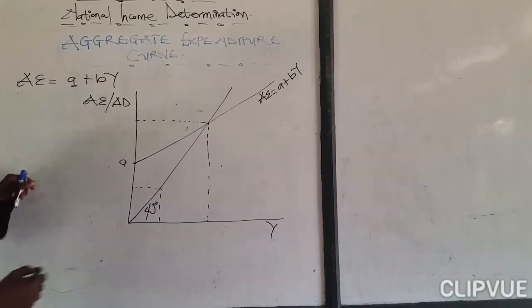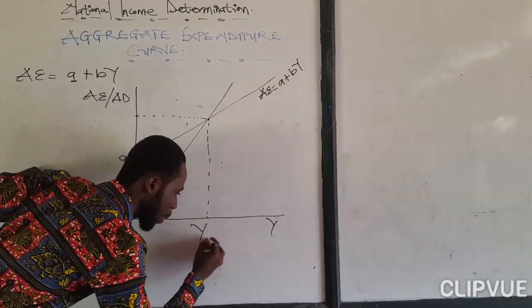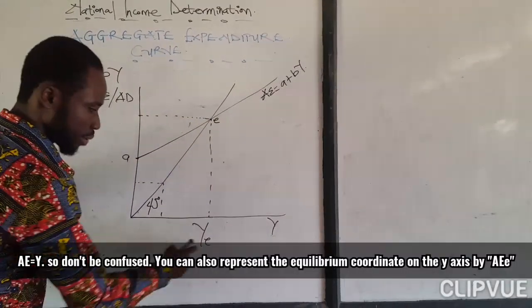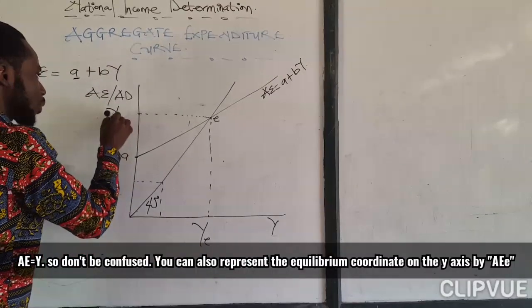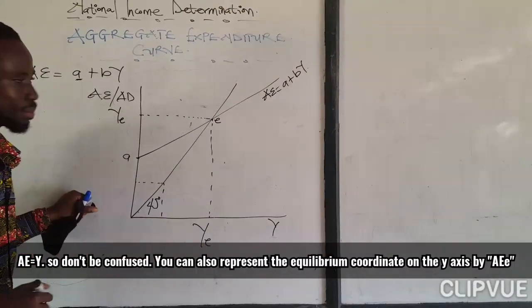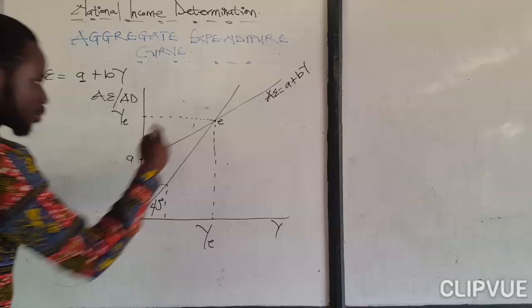I hope it makes sense. So here will give us the equilibrium national income. So here is the equilibrium. So equilibrium national income and equilibrium national income. I hope it makes sense. So that is how to represent the equilibrium national income.